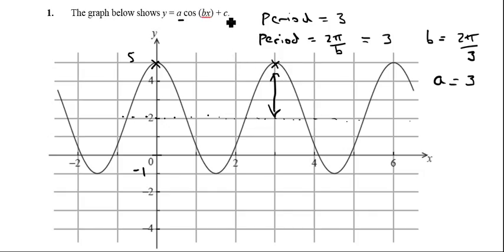And then lastly, the C bit. Well, if I imagine what would happen if I just had the graph of y equals 3 cos x, well that would go between minus 3 and 3. Well, you can see here that this graph is actually going up to 5, therefore in effect it's been shifted up by 2. So therefore C must be equal to 2.